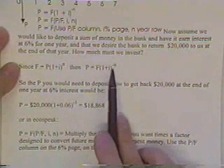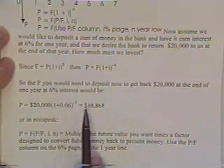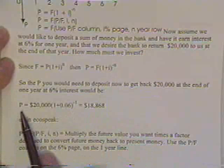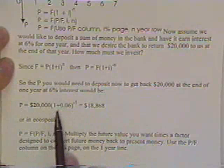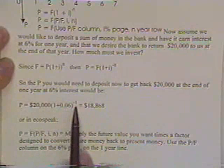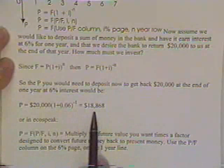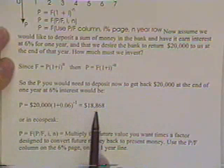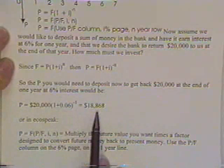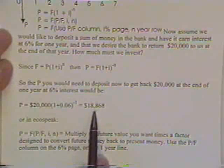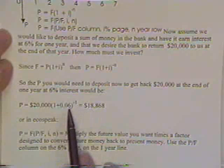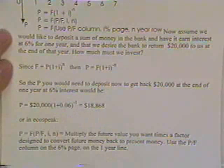You get the future value changed into the present value—I said we wouldn't derive these, but these are so simple, probably worth seeing them—raised to the minus n. So the amount of money needed is twenty thousand times (1 + interest rate) raised to the minus one power: eighteen thousand eight hundred sixty-eight dollars would have to be invested today in order to withdraw twenty thousand dollars from the bank at the end of a year if they pay six percent compounded annually.